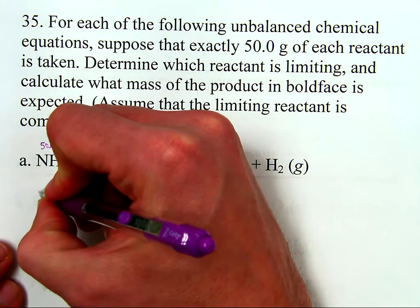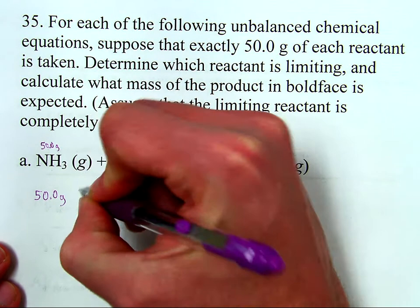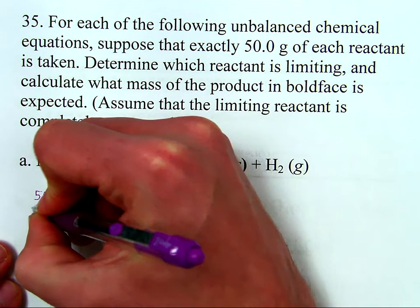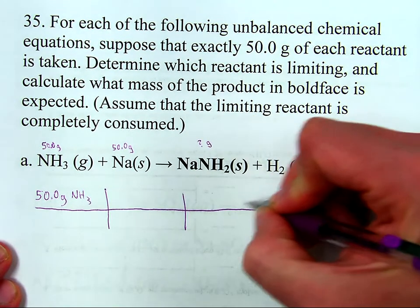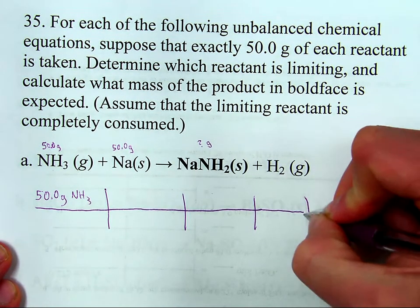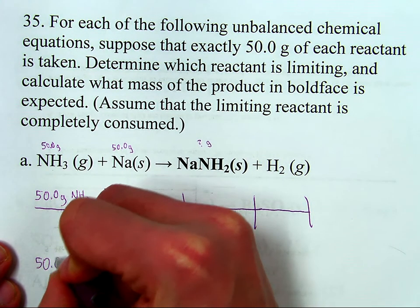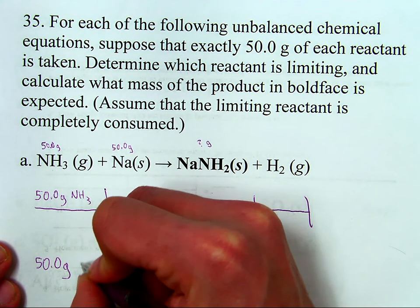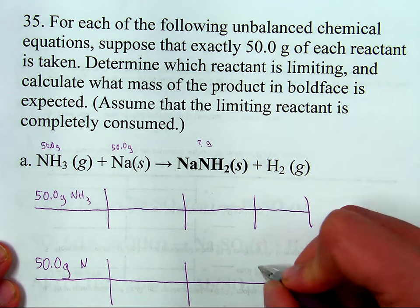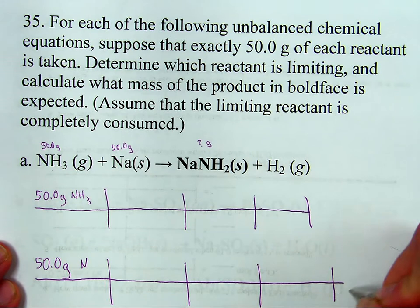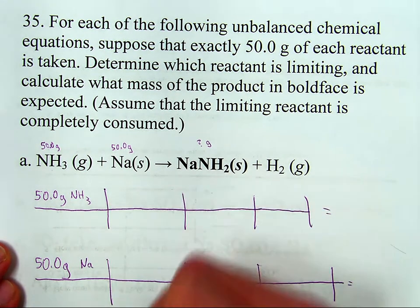Take the smaller of the two answers, and that will be how much product you expect to get. So we'll have one calculation be based on 50.0 grams of ammonia NH₃, and I'll set up the brackets for doing that calculation. And then 50.0 grams of sodium metal.